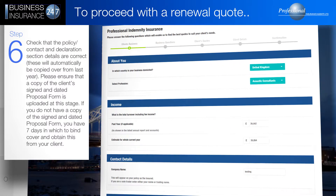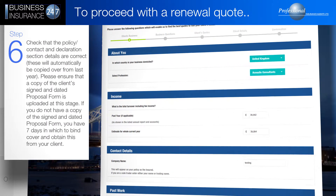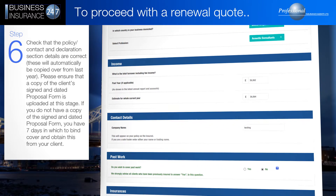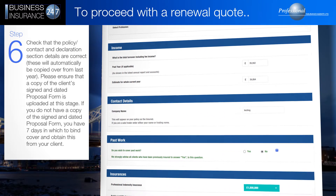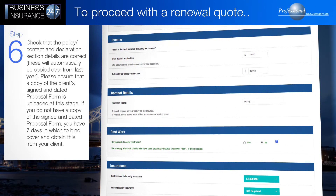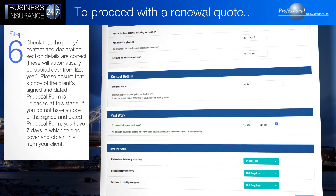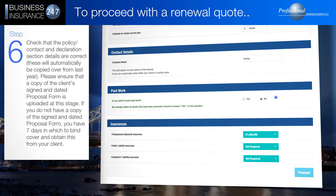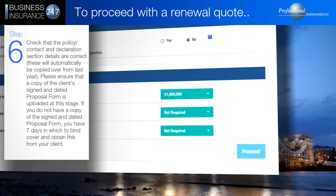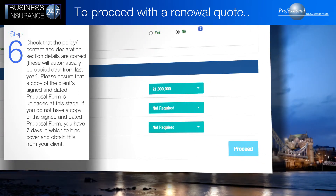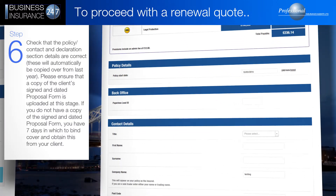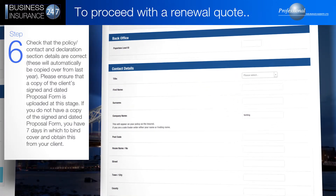Check that the policy, contact, and declaration section details are correct. These will automatically be copied over from last year. Please ensure that a copy of the client's signed and dated proposal form is uploaded at this stage. If you do not have a copy of the signed and dated proposal form, you have seven days in which to bind cover and obtain this from your client.